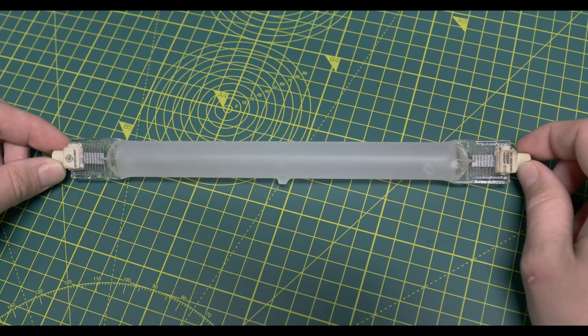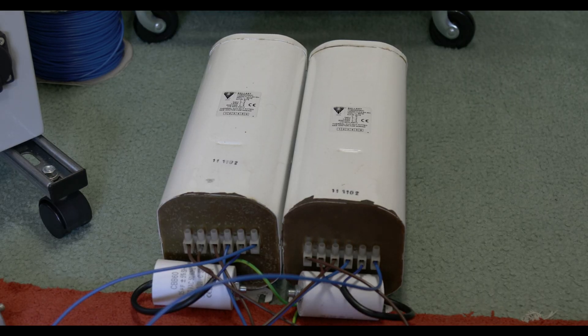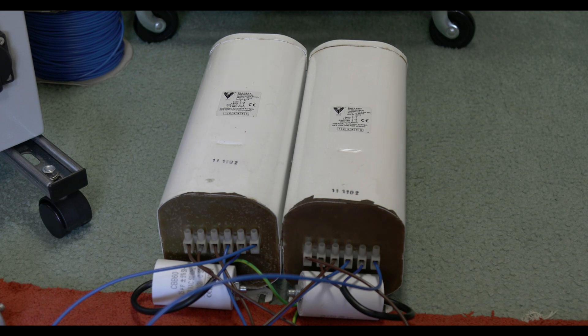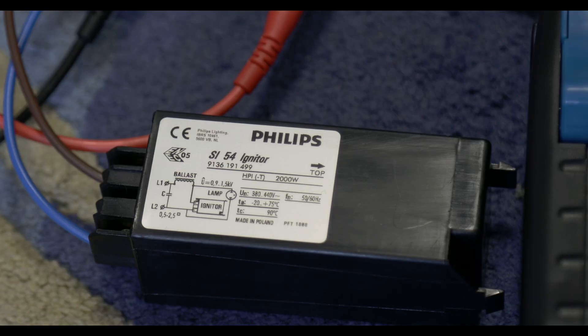The control gear we're going to be using is two 1000 watt metal halide ballasts designed for high voltage arc tube lamps. We're going to run those two in parallel just like we did with that 2000 watt Osram, but this time we're going to use the variac and feed a reduced input voltage which should lower the arc currents to our desired value. We're going to have to use an igniter, so I've got this Philips SI 54 wired up. It's rated for up to 2000 watts metal halide lamp, it's a parallel type, and it should give us an ignition pulse of 1.5 kV.